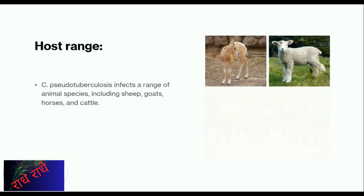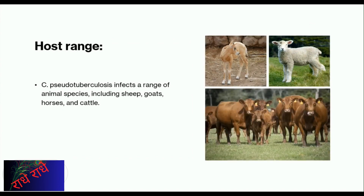C. pseudotuberculosis is a bacterial species that primarily affects livestock, most notably sheep, goats, horses, and cattle. This infection can lead to a range of health issues, and it is essential to be aware of it to monitor the health of the livestock and to provide appropriate treatment.